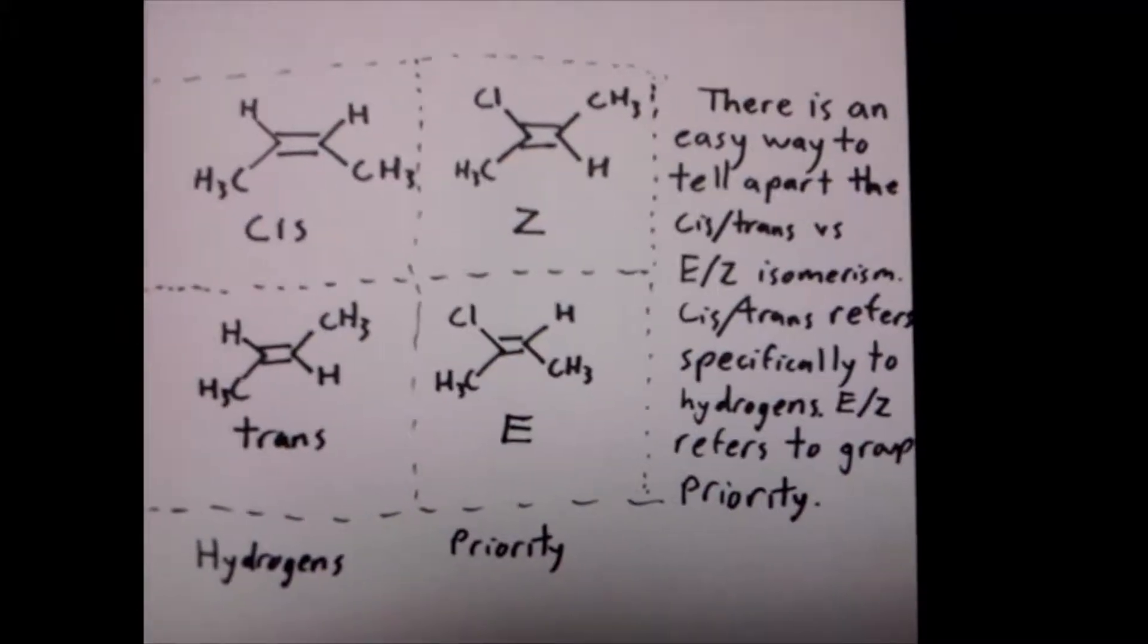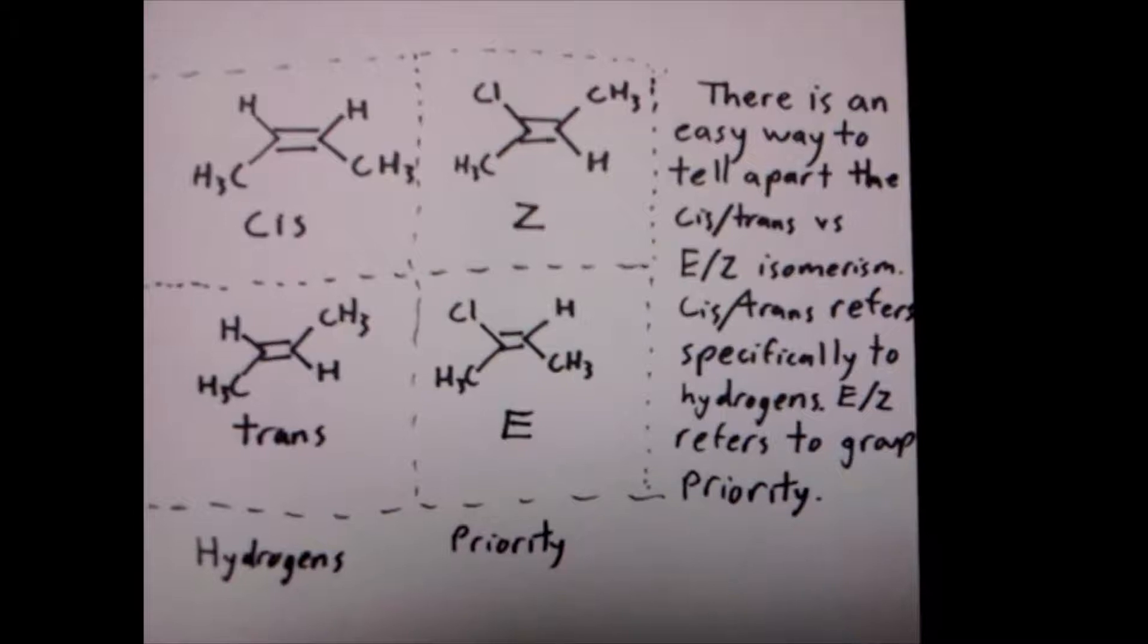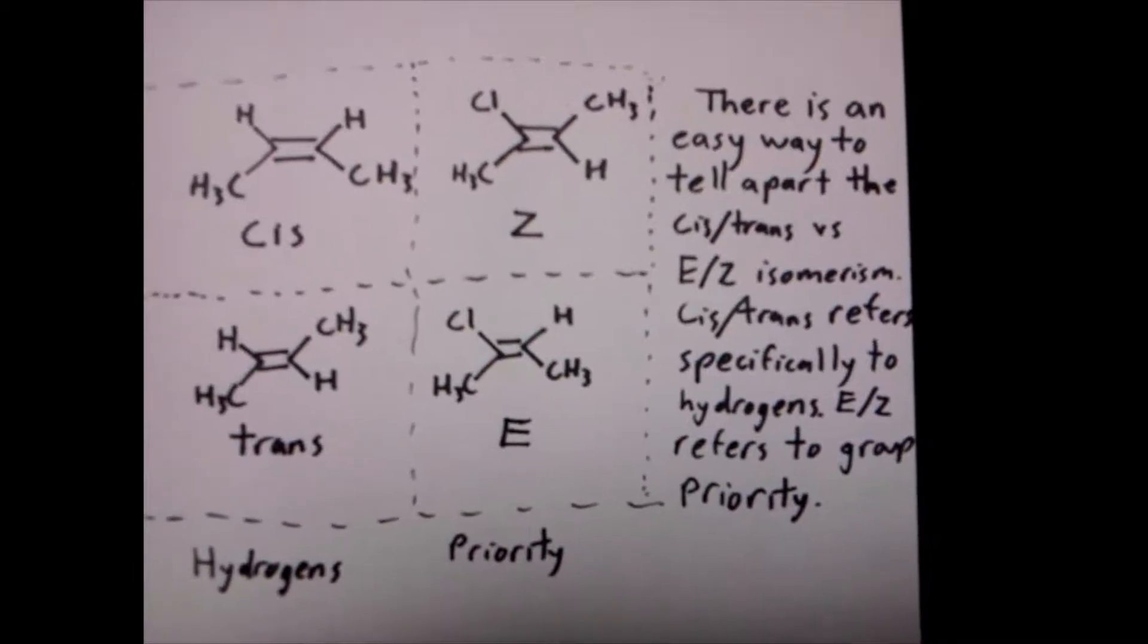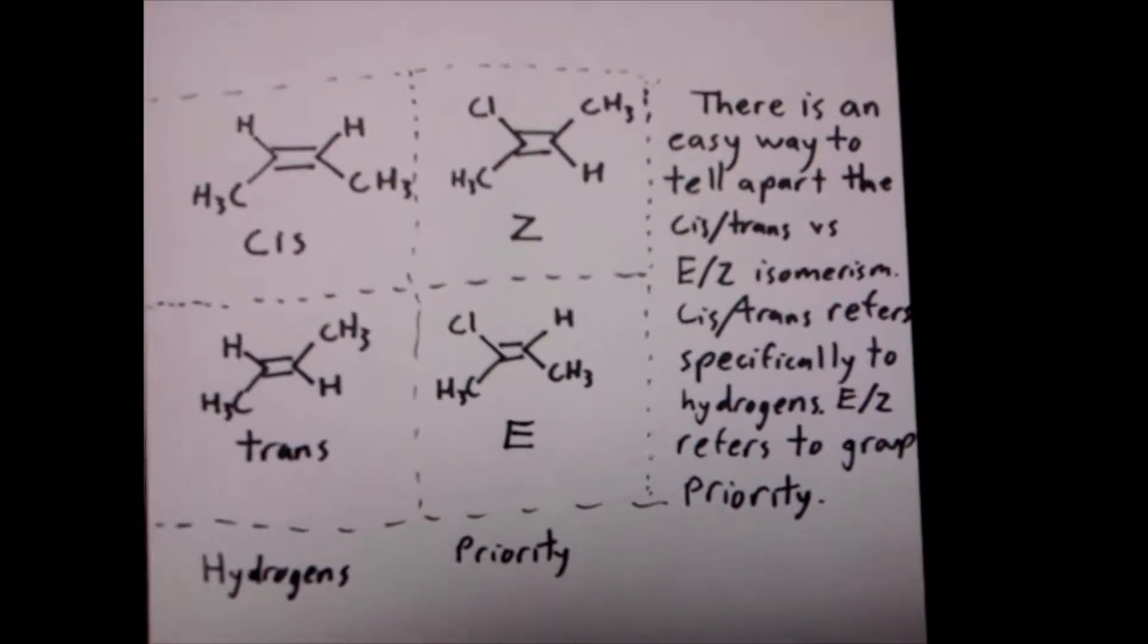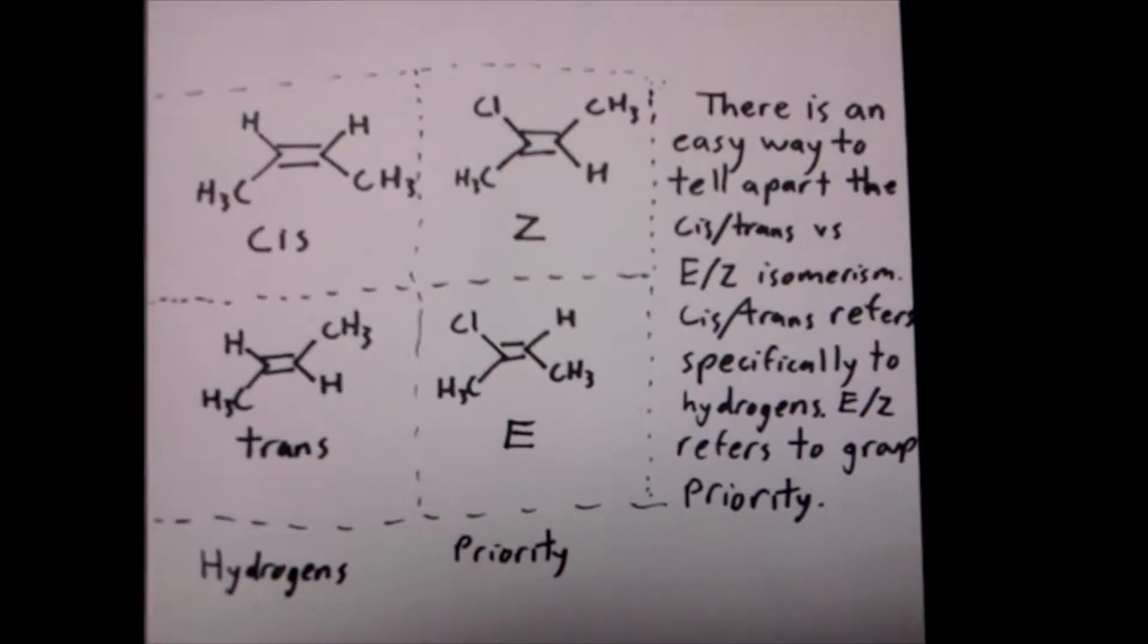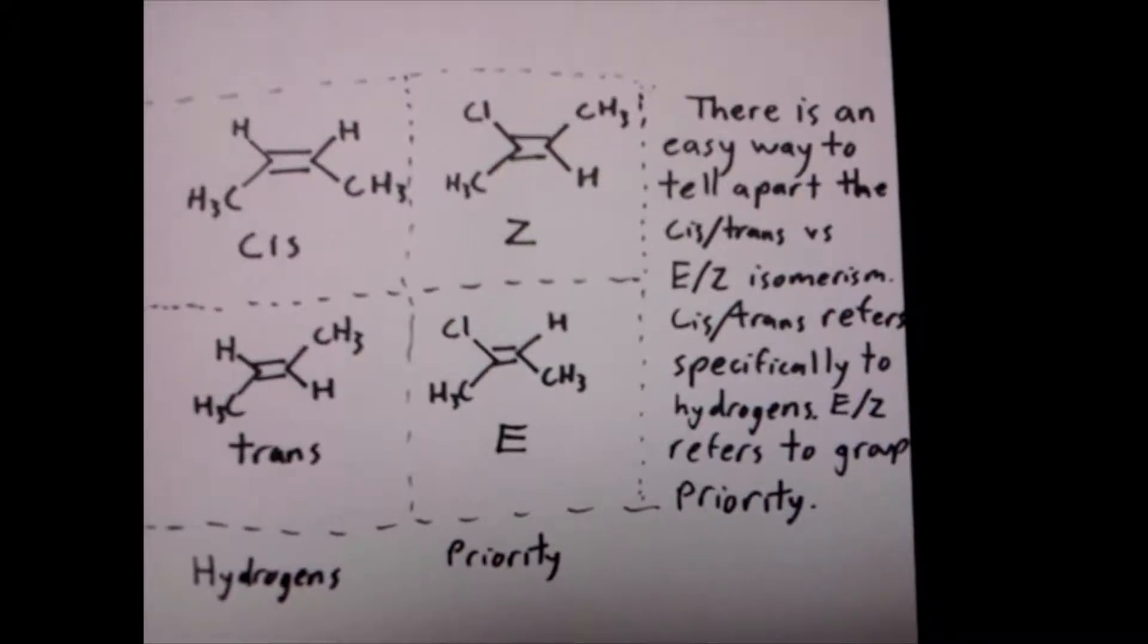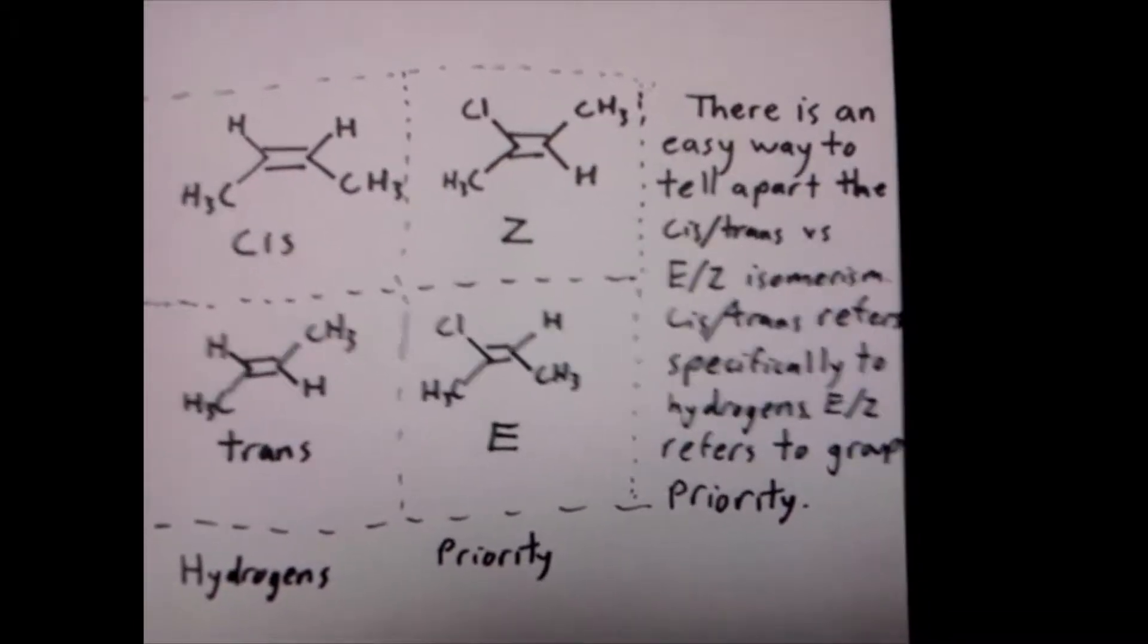Here, I've drawn a table, if you will, of moments where it's appropriate to write cis and trans and where it's appropriate to write E and Z. There's an easy way to tell apart the cis/trans versus E/Z isomerism. Cis/trans refers specifically to the position of the hydrogens, while E and Z refers to group priority.